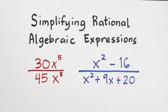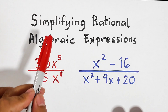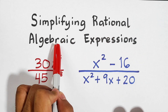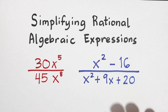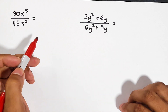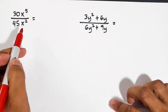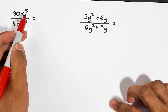Hi guys, it's me, Teacher Gone. In today's video we will talk about simplifying rational algebraic expressions. Without further ado, let's do this topic now. Let me show you how to simplify this rational algebraic expression: 30x raised to the fifth power over 45x raised to the second power.